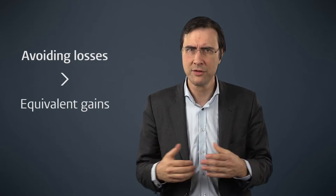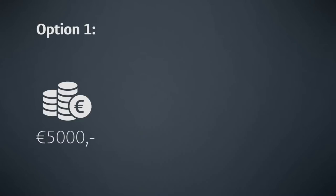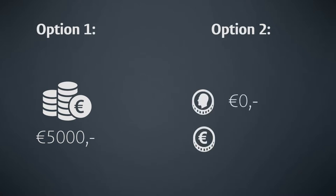Let us now consider the following example. Assume you were given two options. Option one: I will give you 5,000 euros with certainty. Option two: we toss a coin — if it turns out to be heads, you receive nothing; tails, you receive 10,000 euros. What option would you prefer? By far most people prefer the first option — 5,000 euros with certainty.